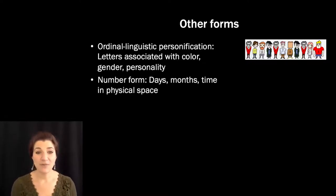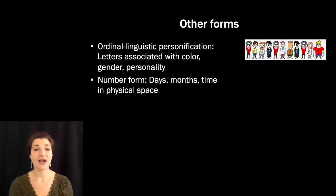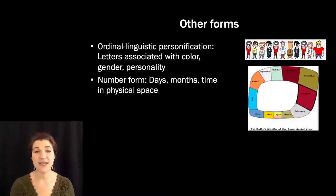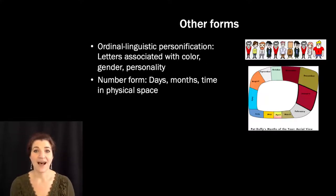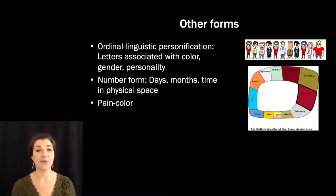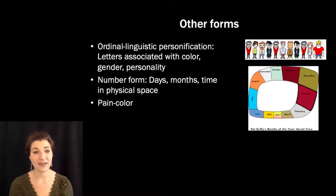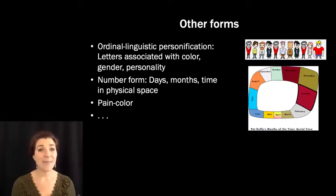Number form synesthetes have associations between days, months, and other forms of time and physical space. Here's an example of how one synesthete arranges the months of the year mentally. There are also pain-color synesthetes, in which people report seeing colors when feeling pain, and many other forms as well.